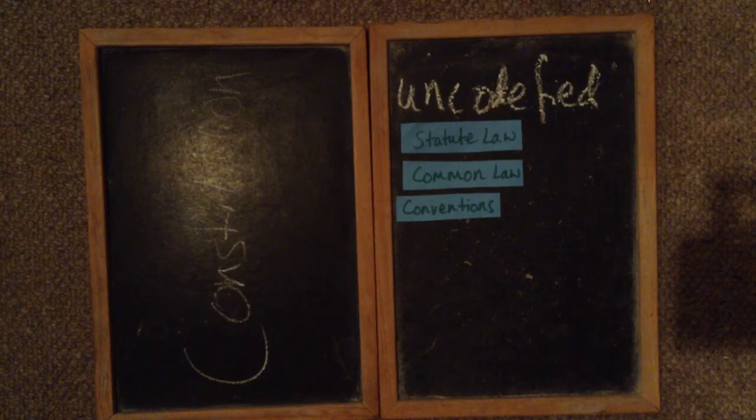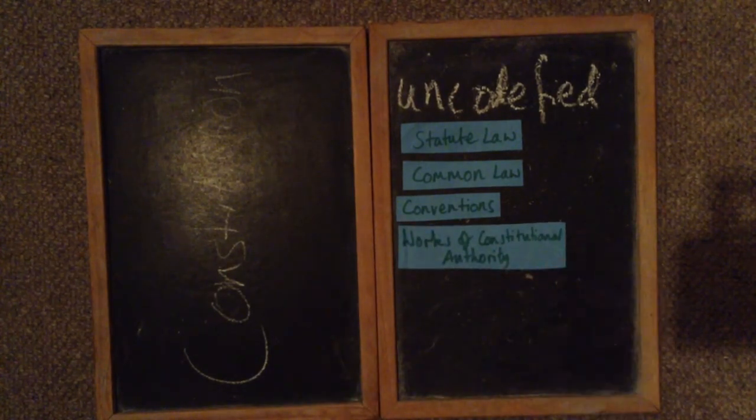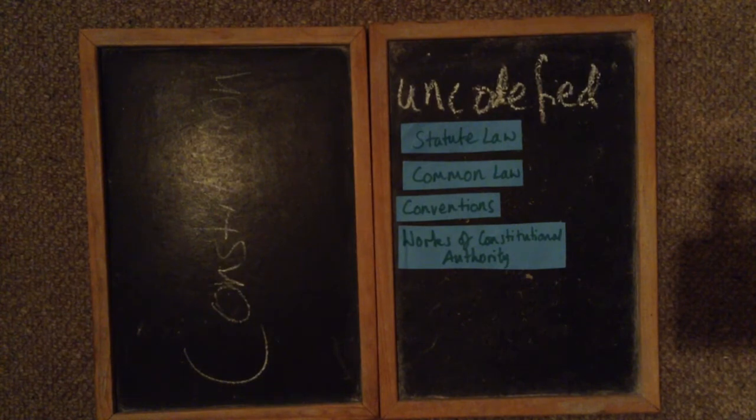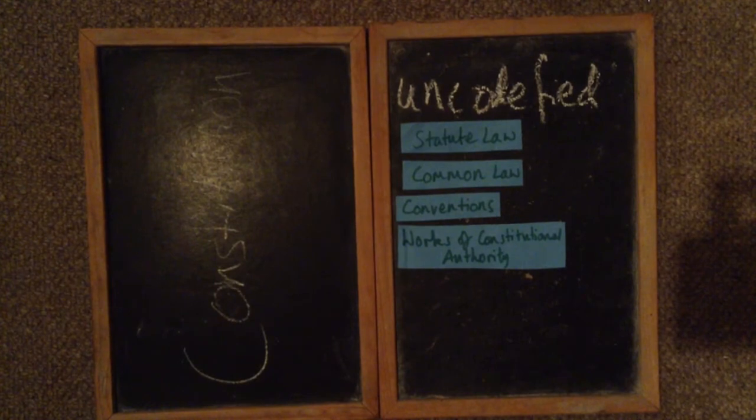The next part is works of constitutional authority. These are books that interpret the constitution and help people who aren't that clear on the constitution, because it's a very confusing thing, the UK Constitution, it not being codified. It helps them to interpret these works which are seen as authoritative.